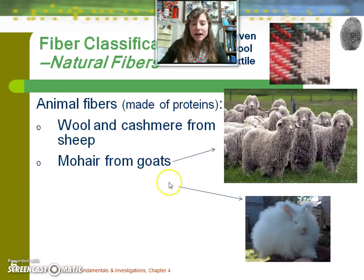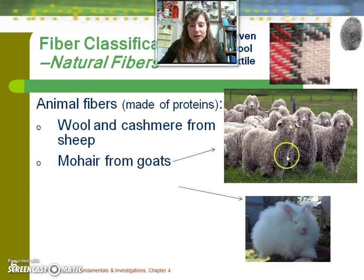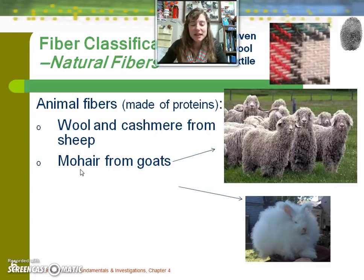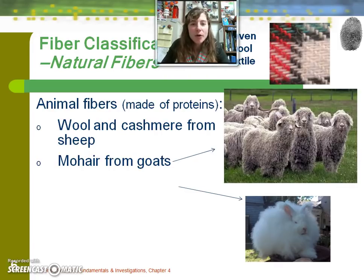This is actually mohair from goats. Wool and cashmere would also fall into this category. Mohair from goats is what this looks like. My maiden name was Mohr, and Microsoft Word would always tell me I was misspelling my name and that it meant to be 'mohair.' Well, that's what mohair looks like.